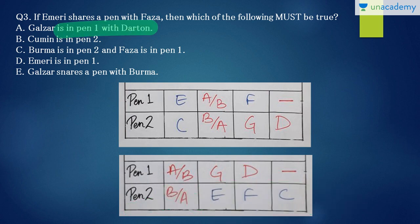Galzar is in pen 1 with Dartan. Galzar is in pen 1 with Dartan. Okay. But they can also be in pen 2. So this is not must be true case. Cumin is in pen 2. Cumin is in pen 2 in this case also and as well as in this case. So I think this is the must be true option. Still let us check the other options as well.